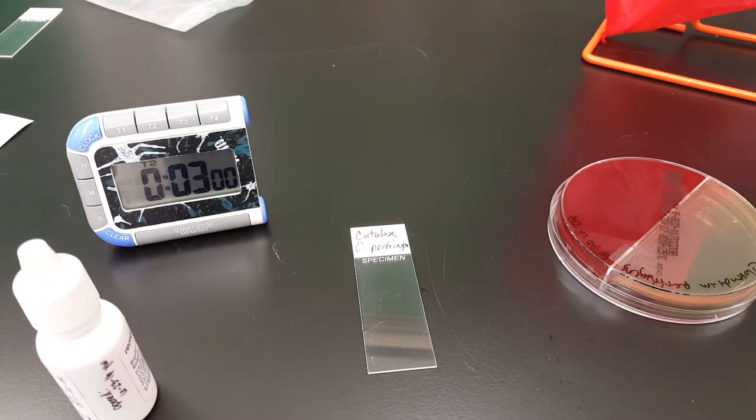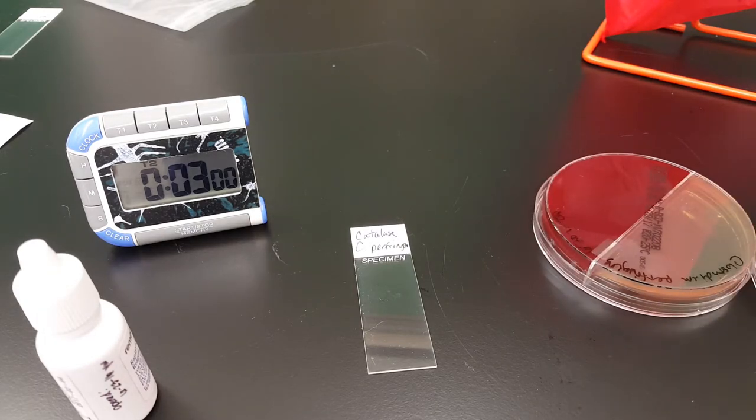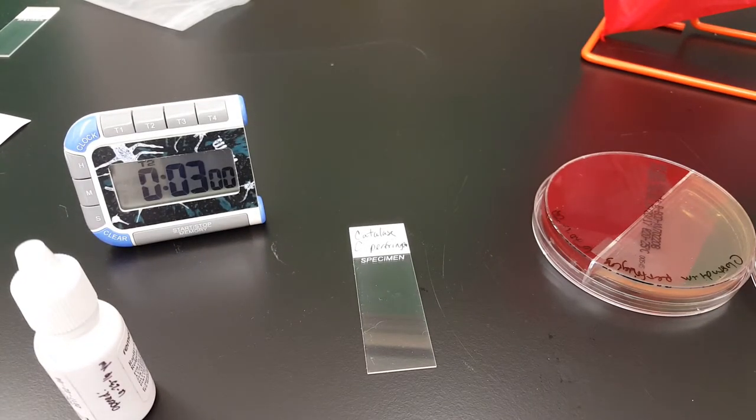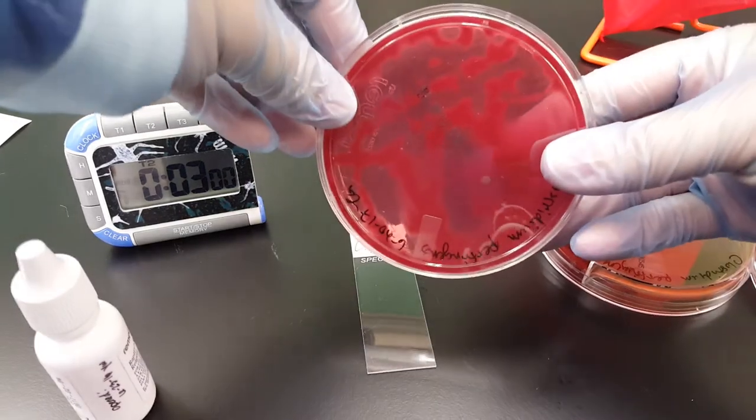They call it that it has a boxcar shape, and it's beta hemolytic on brucella blood agar plate, which is what we have here. So see all that?